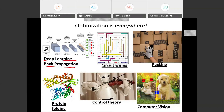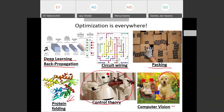Examples of optimization are everywhere: artificial intelligence and deep learning backpropagation optimizes filters to distinguish a dog from a cat in computer vision; laying out wires in a circuit; packing boxes — like trying to fit everything into the trunk of a car; protein folding in biology where the protein minimizes energy by folding in many possible ways; and control theory such as a robot playing the violin.